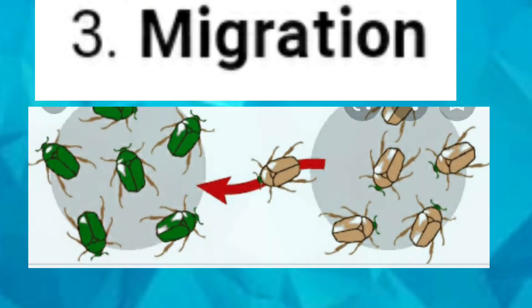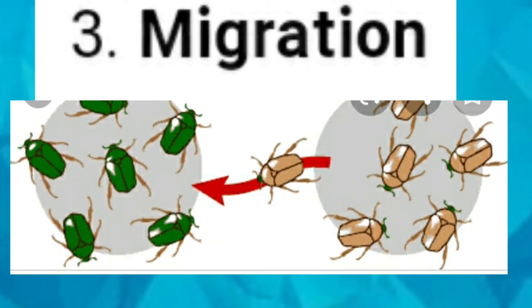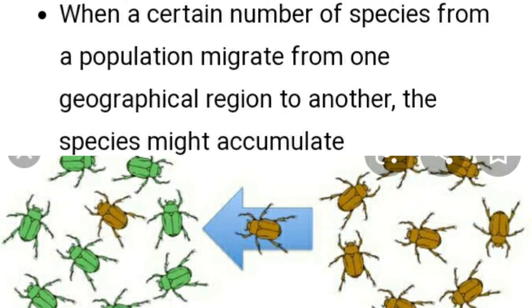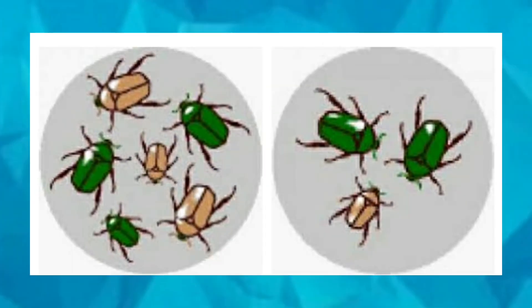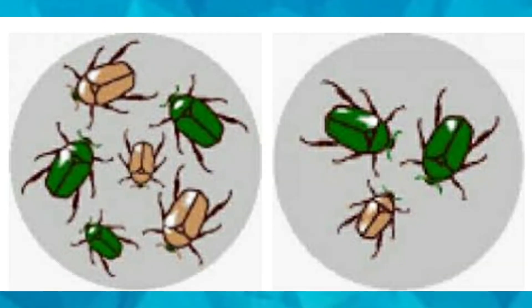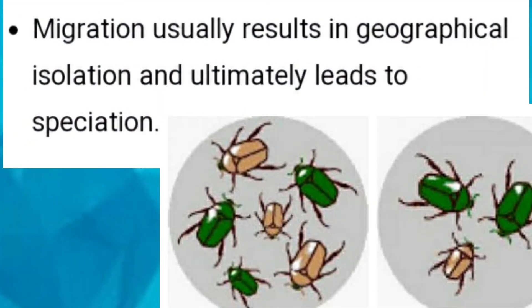The next factor is migration. Migration also plays an important role in speciation. A number of individuals from a population migrate from one geographical region to another, and the species might accumulate characteristics which are different from those of the original population. Migration usually results in geographical isolation and ultimately leads to speciation.